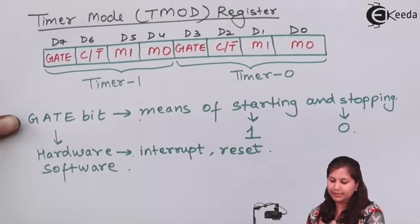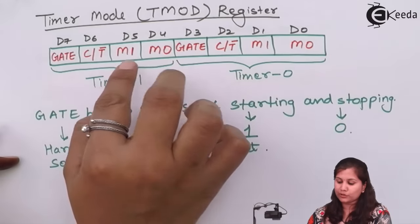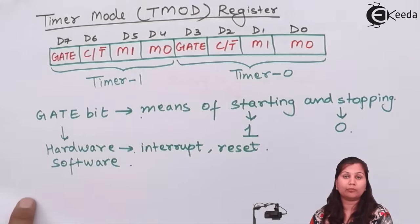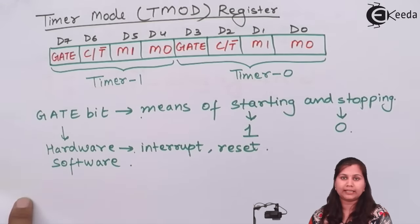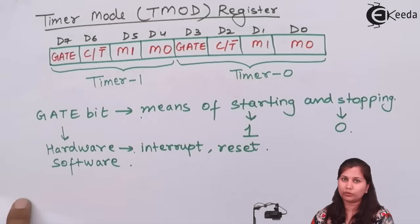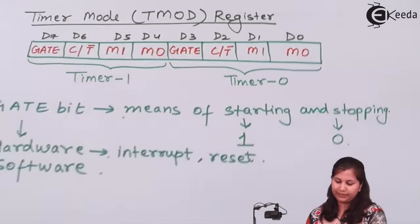The next bits in the TMOD register are M1 and M0. These two bits in both timers decide the modes of operation. They can take different combinations: 00, 01, 10, and 11. Depending upon the combination, we have four modes — Mode 0, Mode 1, Mode 2, and Mode 3. Let us study in detail what these four modes of operation are.